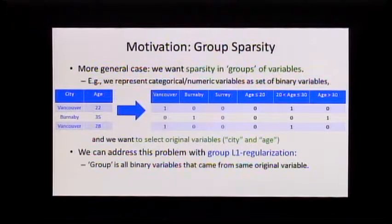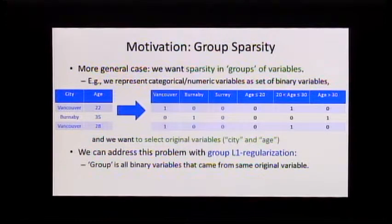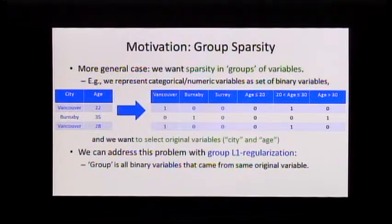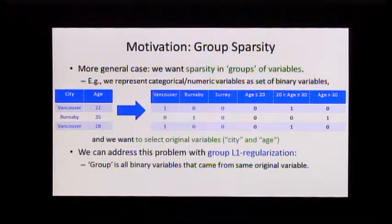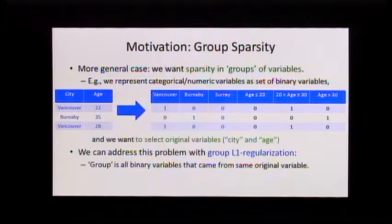The thing here is we just made up these original variables. So if I want to talk about feature selection, I don't care about picking the Vancouver variable — I want to pick the city variable. We've got this many-to-one situation where we have three different city variables corresponding to one original variable. If I want to do variable selection in the original variables, I have to actually select all three. If I just select one of them, I still have to record the city for every new person.